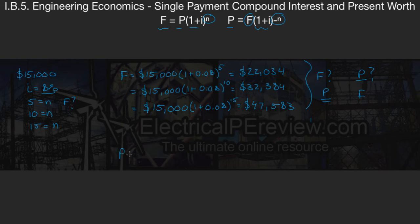So this time, we're going to say P is going to equal, we're going to start with the 15-year period one. P is going to equal a future amount of $47,583 times the same 1 plus 0.08 at a pay period of negative 15 years.